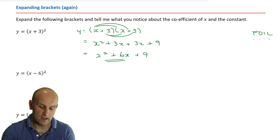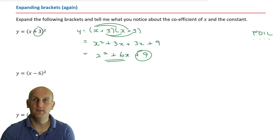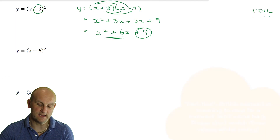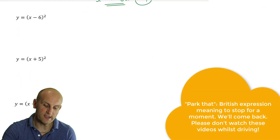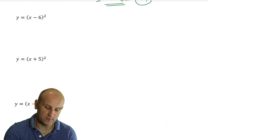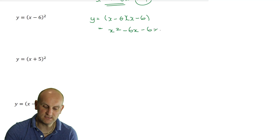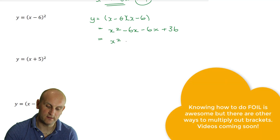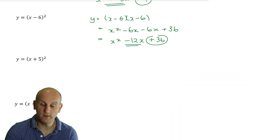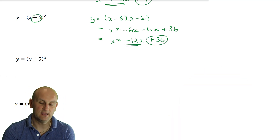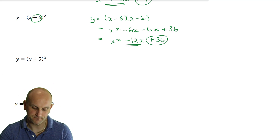What do you notice about this plus 3 and this plus 9? Park that, we'll come back. Here's another example. I've got y equals x minus 6 squared. We get y equals x minus 6 times x minus 6, which gives me x squared minus 6x minus 6x plus 36, which when I simplify gives me x squared minus 12x plus 36. What do I notice about that last number in comparison to this one here?